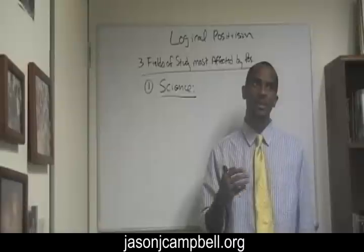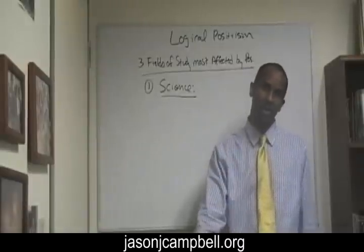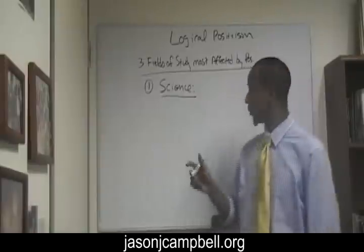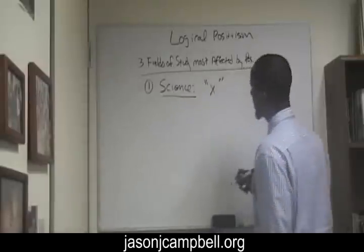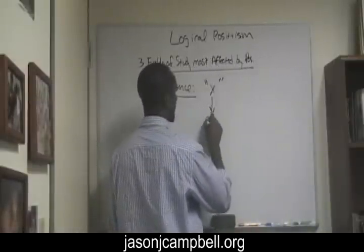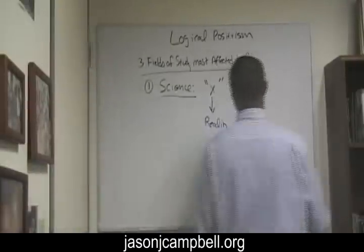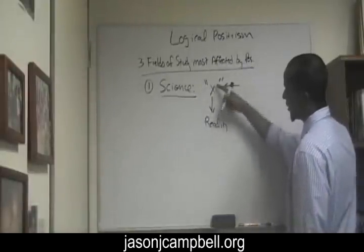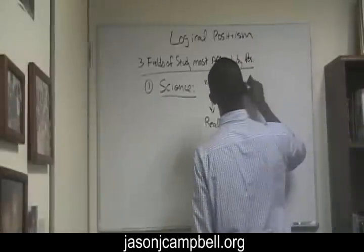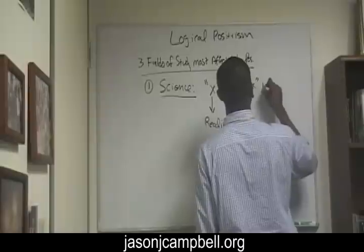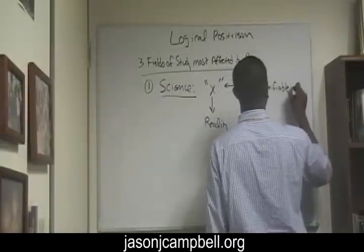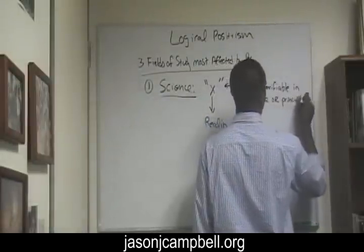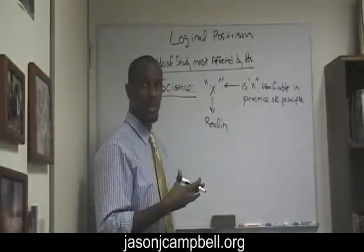Scientists make claims, they make propositions about the world. What the logical positivists then say is that this claim about the world — we'll call this claim x — is said to describe some aspect of reality. What the positivists say is the following: because remember, this is a meta-descriptive account, what we're doing is we're describing the scientist's description of reality. They say: is x verifiable in practice or in principle? This is a pretty cool tool to see if what you're saying has any meaning.